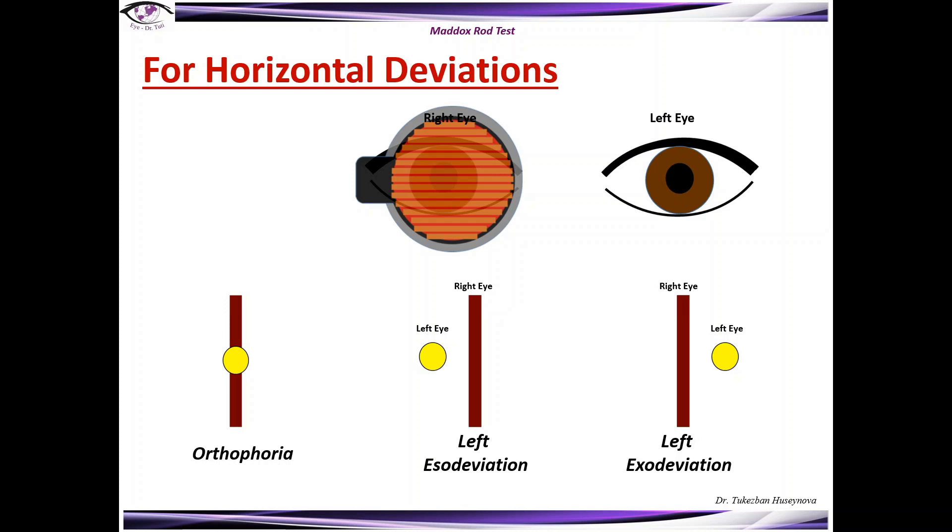So that's why I wanted to define which exactly eye we're talking about here. So this is the left esodeviation in case of the light on the right side and the left exodeviation in case if the light on the left side.